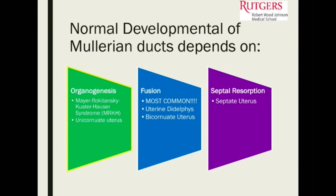If you have a septal resorption problem, you have a uterus that's externally normal, but because the septum inside didn't fully resorb, you have a septum on the inside of the uterus.